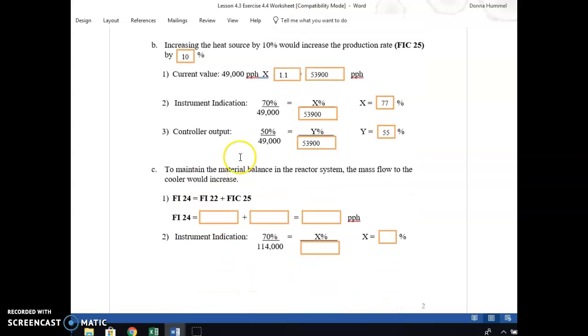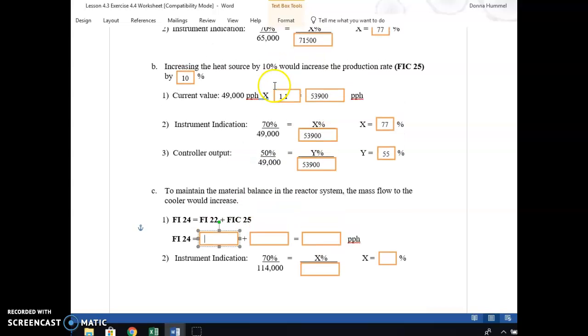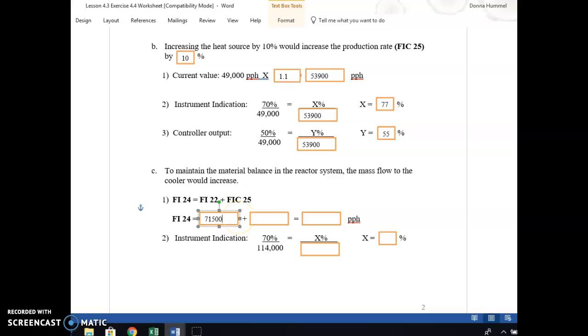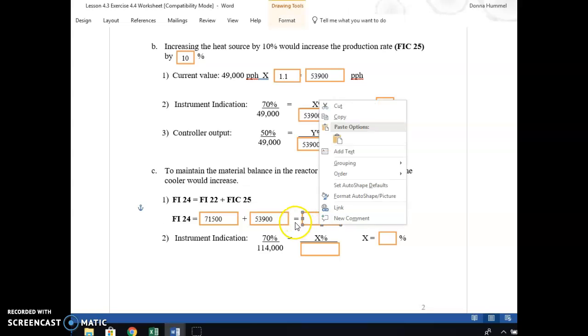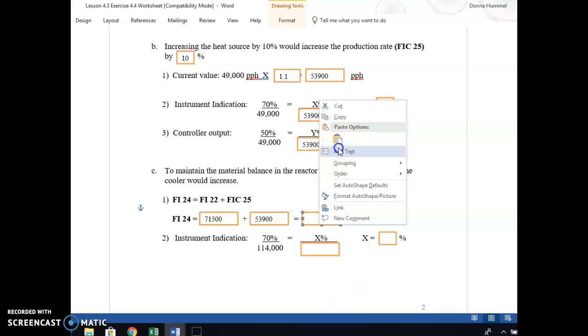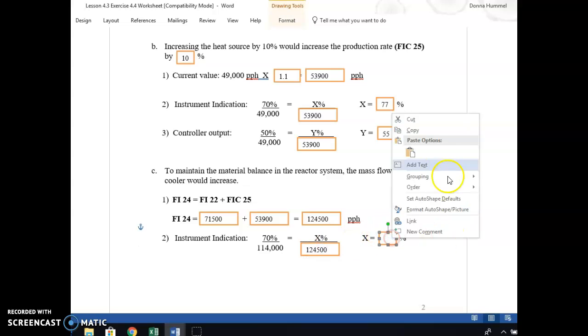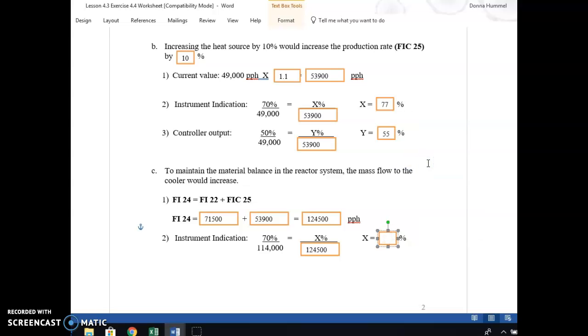Now, we're just going to total. We can do 10% of the output of what the pounds should be normally, which is 10% of this 114,000, but we could just add them all together. We know balance-wise that 71,500 plus 53,900 should equal the new number, and that is 125,400. If you take 1.1 times this 114,000, you'll get the same number. So what is the instrument indicating? Our instrument is at 70% for this normal flow of 114,000. So now we're going to take the ratio at 125,400. So now our number reading out of that instrumentation is 77%.